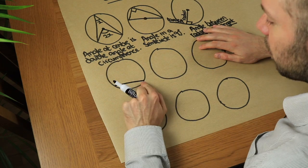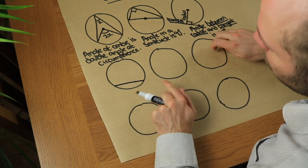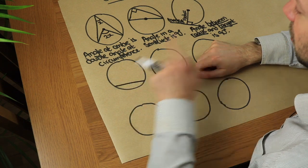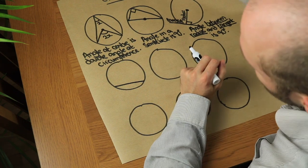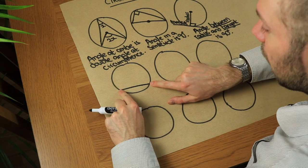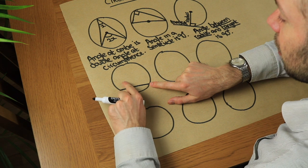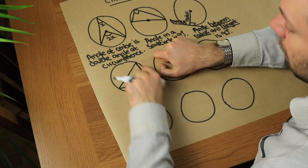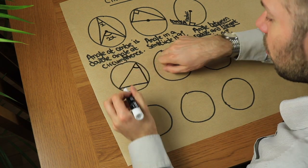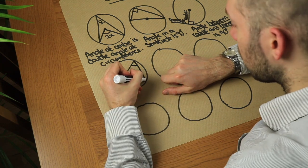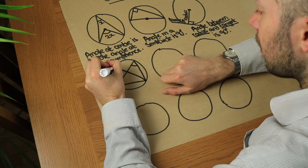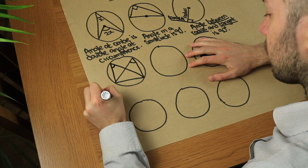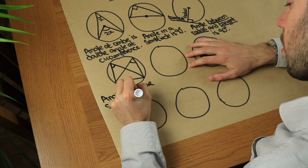The next circle theorem: if we draw a chord in the circle, the region either side is known as a segment — a minor segment and a major segment. If you fire from the two ends of that chord into the major segment, that is the angle in the segment. Wherever you fire from the two ends of the chord to another point in that segment, the angle will always be the same. We say: angles in the same segment are equal.